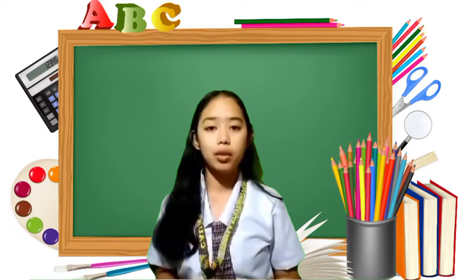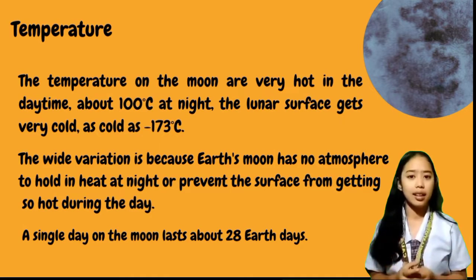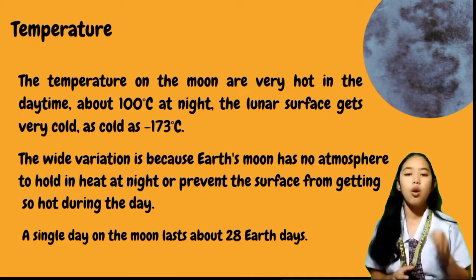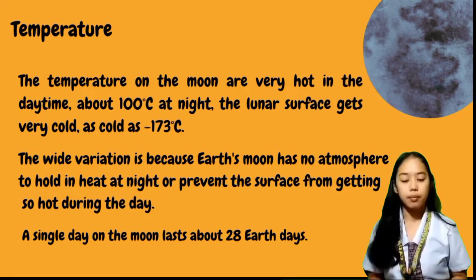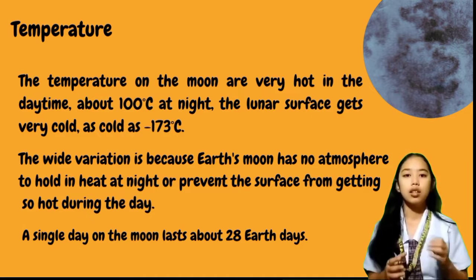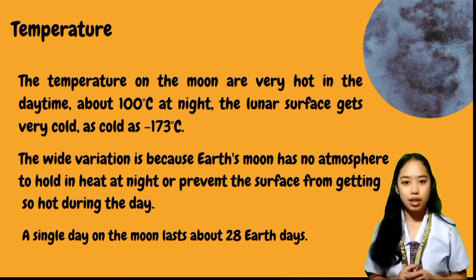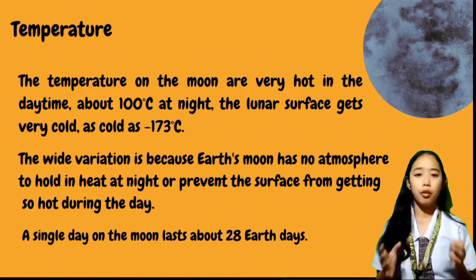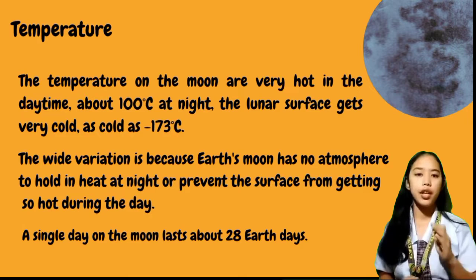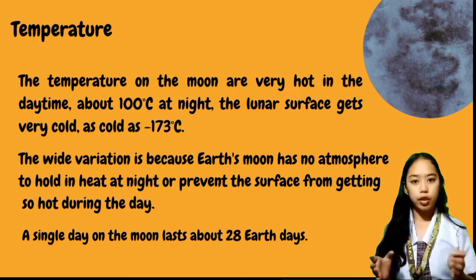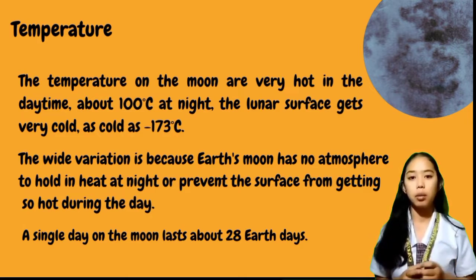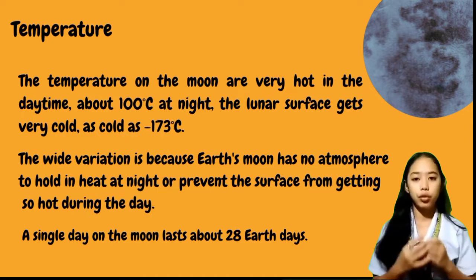Now we will talk about the temperature. The temperature on the Moon is very hot in the daytime, about 100 degrees Celsius. And at night, the lunar surface gets very cold, as cold as negative 173 degrees Celsius. This wide variation is because the Moon has no atmosphere to hold in heat at night or prevent the surface from getting so hot during the daytime.